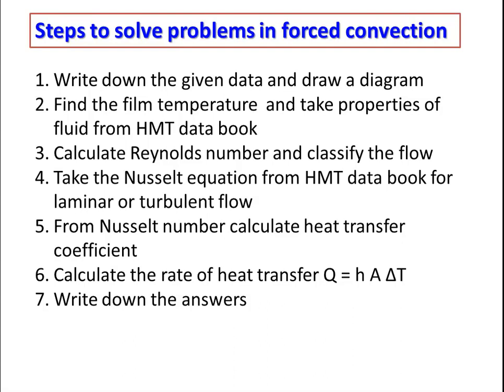Then calculate the Reynolds number based on the geometry — whether it is flat plate, cylinder, or sphere — and classify the flow. When the Reynolds number is less than 5×10⁵, the flow is laminar; otherwise, when the Reynolds number is more than 5×10⁵, the flow is turbulent. Then, based on the flow configuration, geometry, and Prandtl number, take the Nusselt equation from the heat and mass transfer data book for laminar or turbulent flow over flat plate, cylinder, or sphere. From the Nusselt number, calculate the heat transfer coefficient — Nusselt number equals h·L/k or h·D/k depending on geometry. Then calculate the rate of heat transfer Q = h·A·ΔT, and at the end write down and summarize the answer as per the requirement.